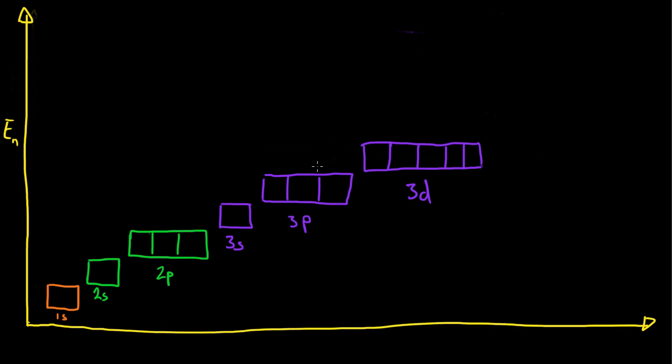So if we wrote down the electron configuration of the element where we filled electrons up to here, that would be 18 electrons, and that's argon. So argon, its atomic number is 18, and we can write its electronic configuration. So we have 1s2, 2s2, 2p6, 3s2, and 3p6.